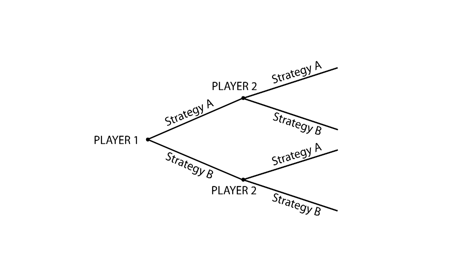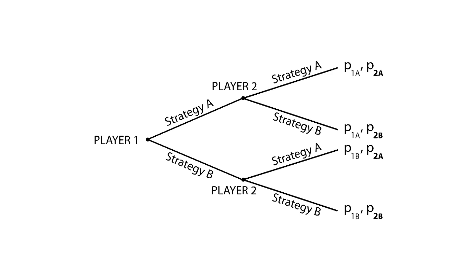Depending on each decision, we would have different payoffs. These are represented at the end of each final branch. Payoffs are separated by commas, the first term corresponding to the payoff for player 1 and the second term corresponding to the payoff for player 2.